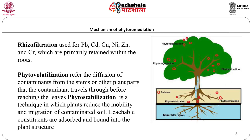Metallothionins and phytochelatins are two classes of chelators involved in metal accumulation. Different organic acids and ligands have been found associated with various metals in distinct parts of different plants. For example, in Thlaspi, most zinc in roots was associated with histidine while in shoots it was associated with organic acids, and cadmium in the leaves was found to be bound with sulphur ligands. In Arabidopsis, zinc was mostly stored in the vacuoles of mesophyll cells, while in Thlaspi it was in the vacuoles of epidermal cells.